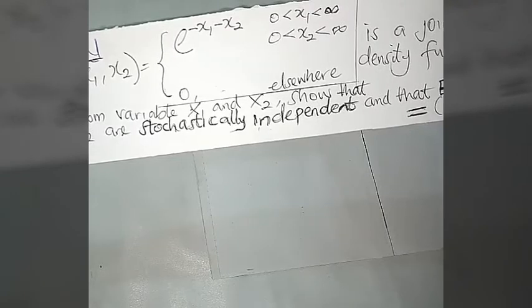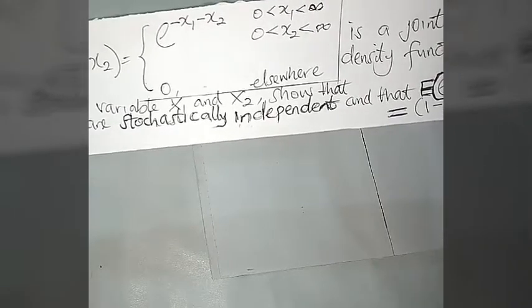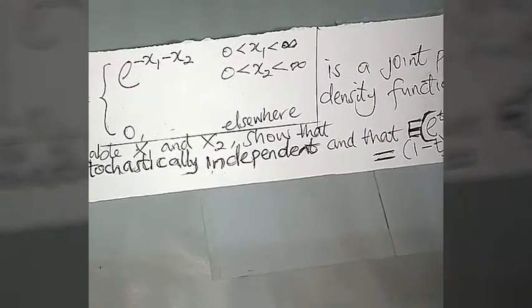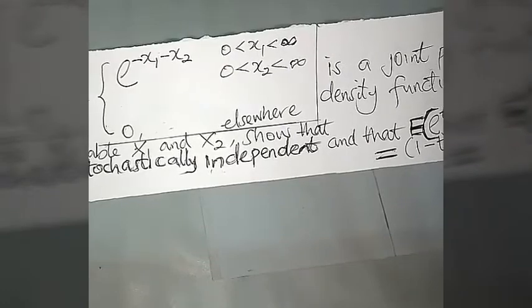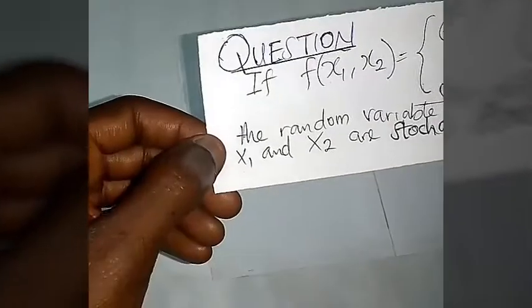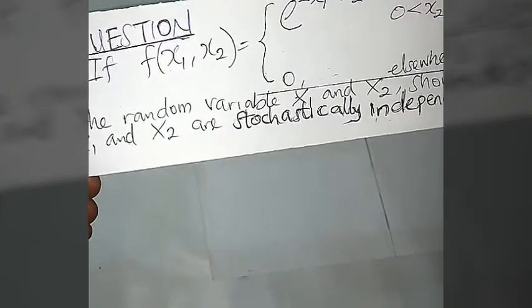Hello again. We have a question on joint probability density functions. We are taking up two continuous random variables x1 and x2. The question states that the function of x1 and x2 is equal to the exponential of minus x1 minus x2, with the condition zero less than x1 less than infinity and zero less than x2 less than infinity, or zero otherwise.